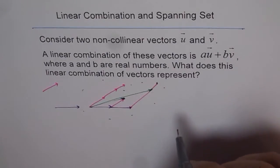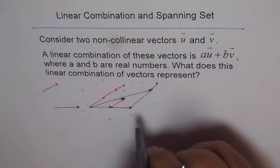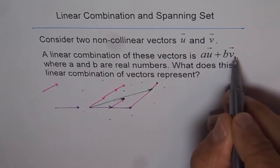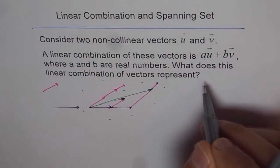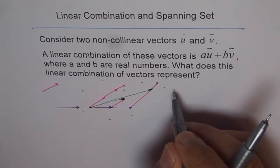In fact, each and every point on this plane can be represented as diagonal of au plus bv, where a and b are real numbers.